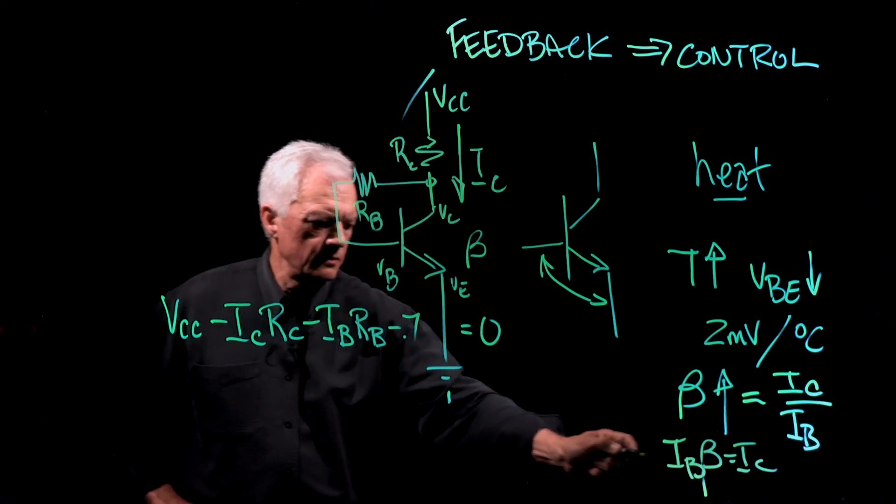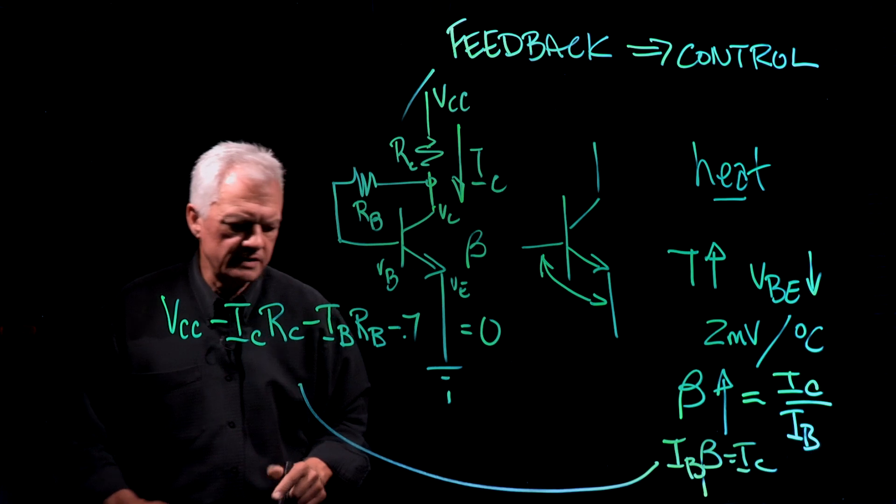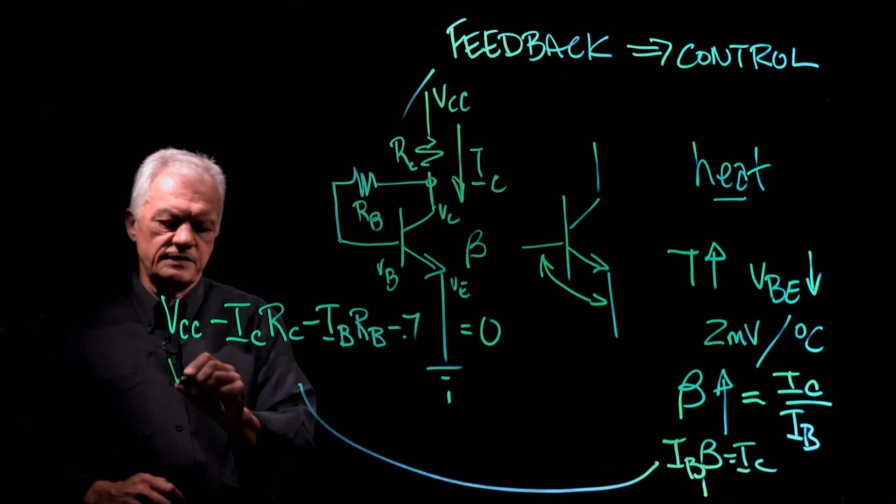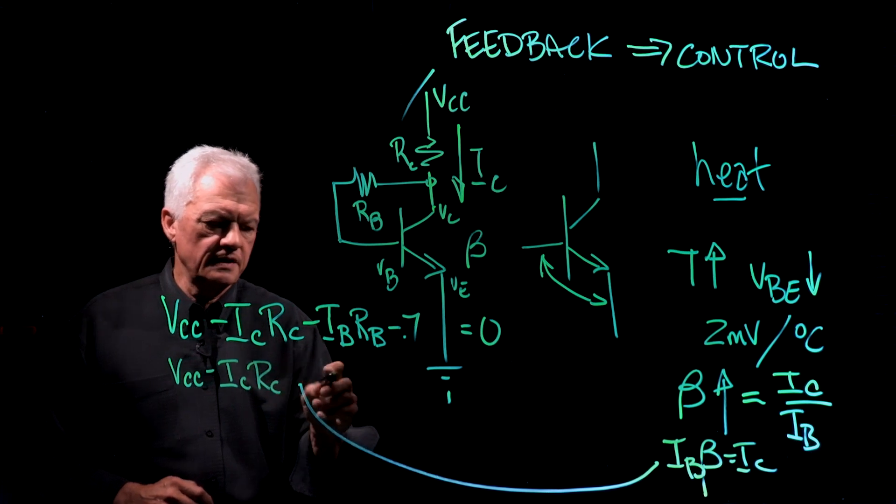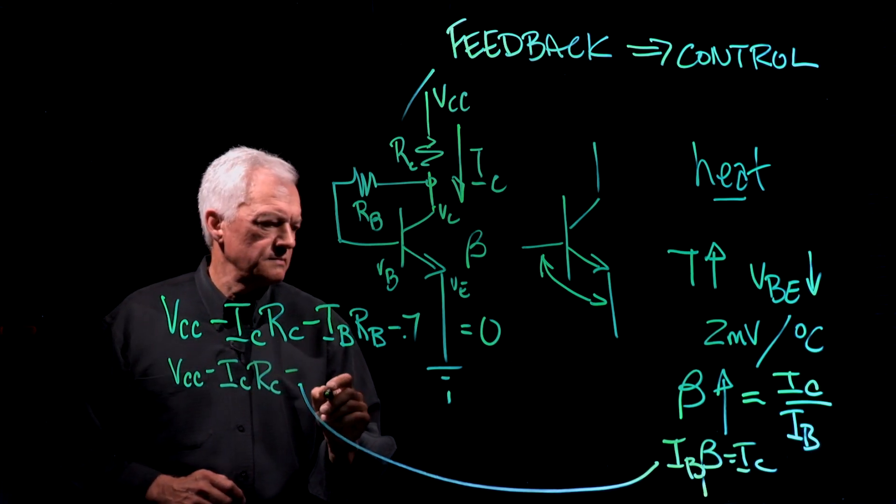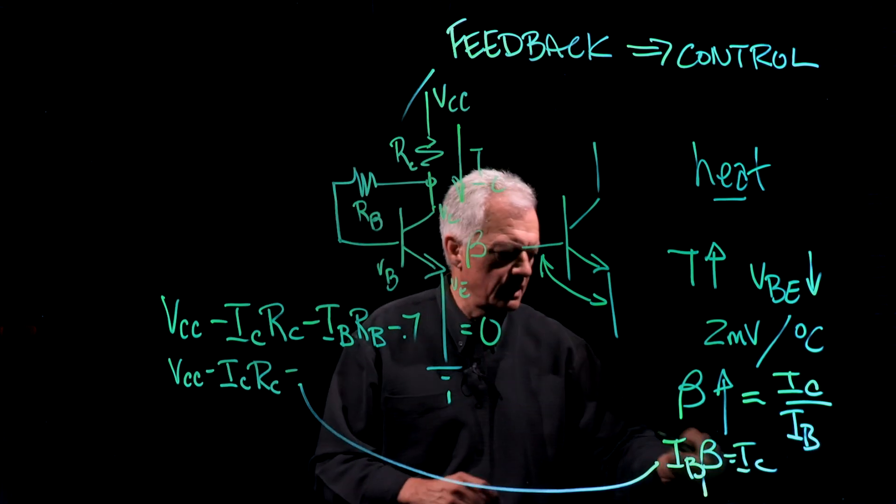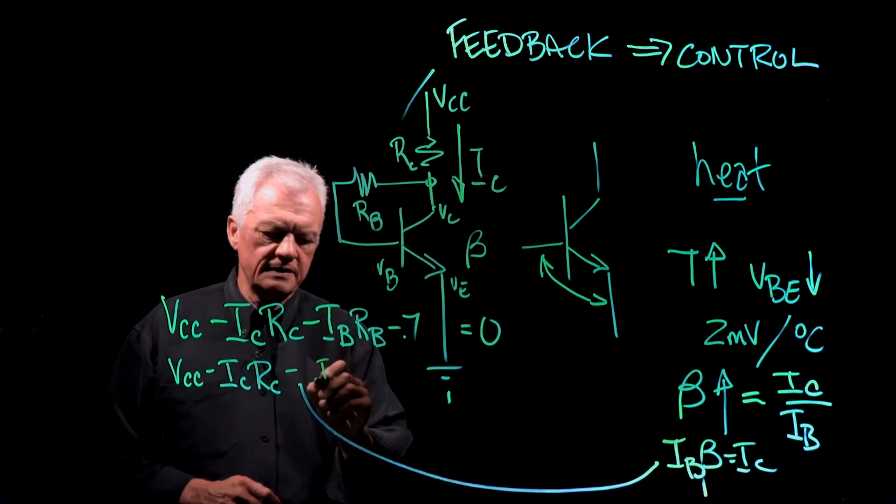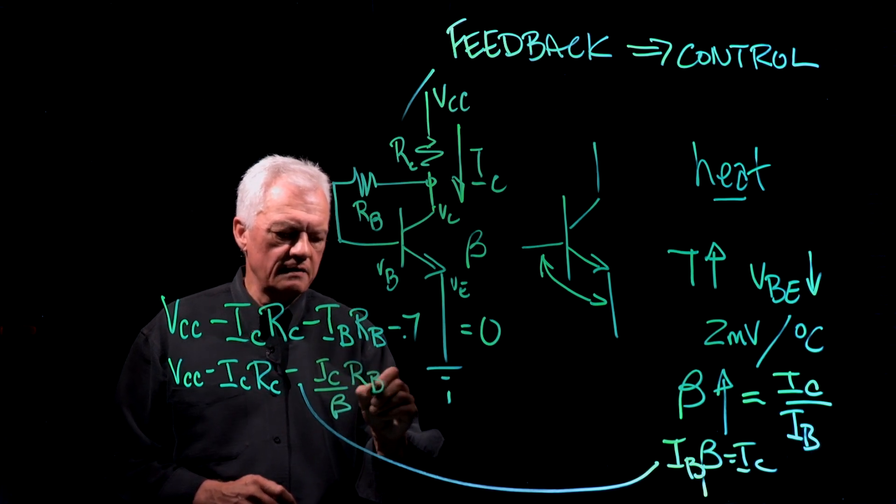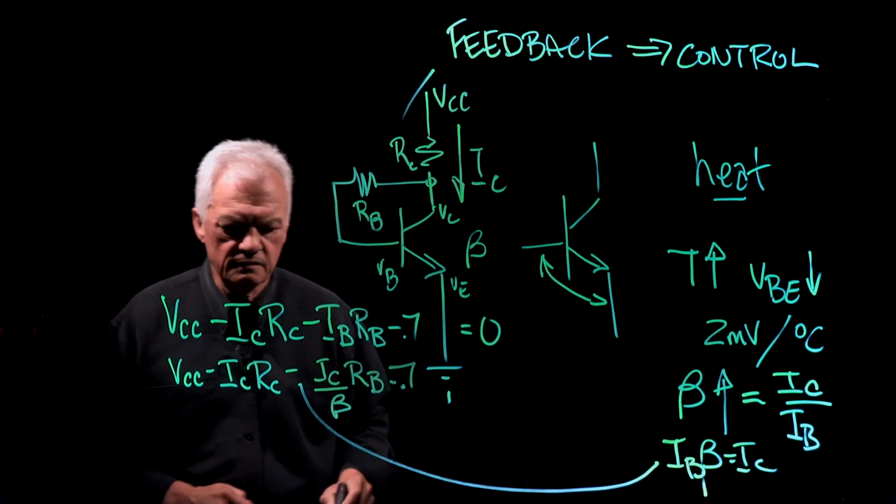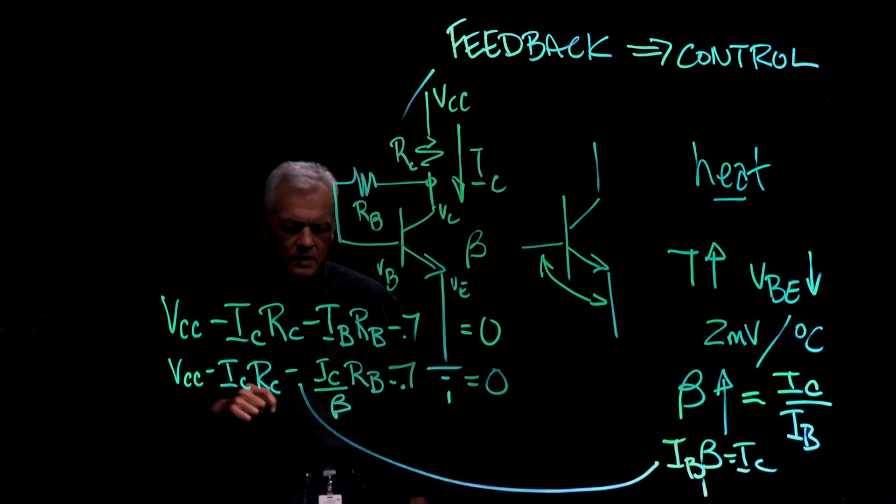But do we really have two unknowns? We know that IB times beta equals IC. So we substitute. We're going to substitute into this equation. What is that going to give us? What we have here then is VCC minus ICRC minus, in this case here, we're substituting for IB. So IB will be equal to IC divided by beta. IC divided by beta, RB minus 0.7 equals zero. All right, now we only have one unknown.